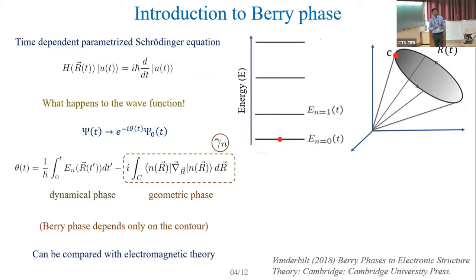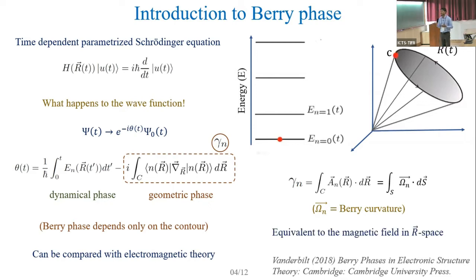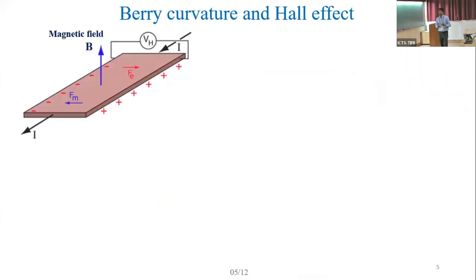When we have a phase, we can compare it with concepts from electromagnetic theory. We can think of a vector potential and a corresponding magnetic field that gives rise to this phase. This magnetic field-like term is basically the Berry curvature in this parameter space. When we have a periodic system, K is a good quantum number and we can refer to this Berry curvature as a magnetic field in the momentum space.